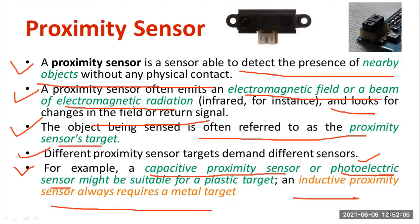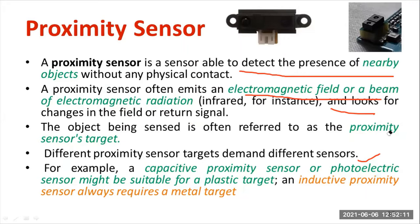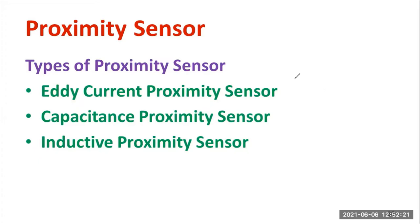A proximity sensor is a device used for measuring the presence of a nearby object. You can classify proximity sensors into three types: eddy current type, capacitive type, and inductive type. Eddy current and inductive type proximity sensors are similar and are used for detecting the presence of metal bodies, whereas capacitive type proximity sensors are majorly used for non-metal objects such as rubber and plastic.